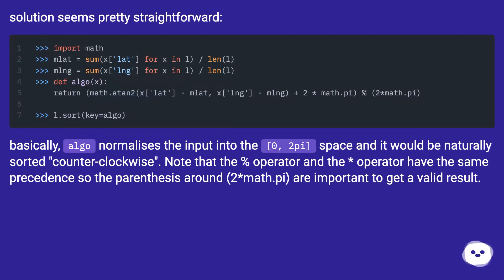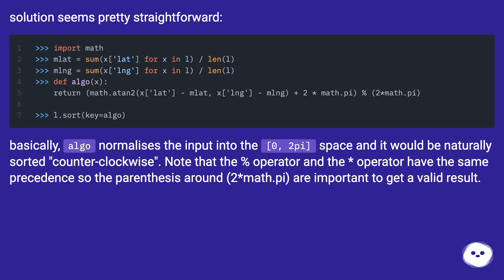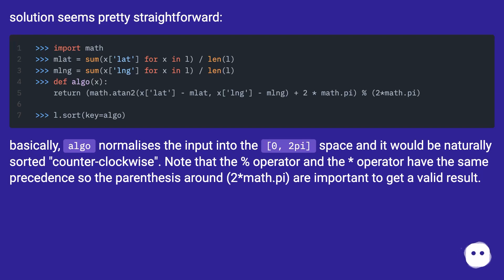The solution seems pretty straightforward. Basically, the algorithm normalizes the input into the space and it would be naturally sorted counterclockwise. Note that the percent operator and the addition operator have the same precedence, so the parentheses around the math.pi expression are important to get a valid result.